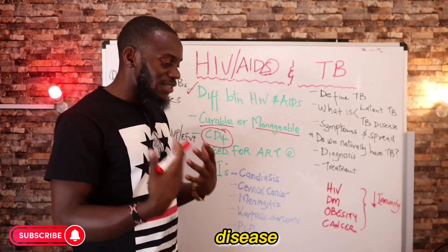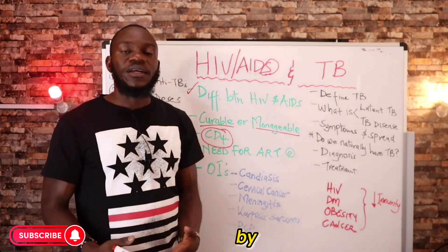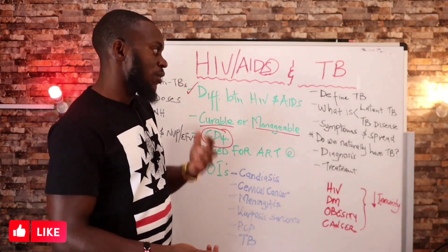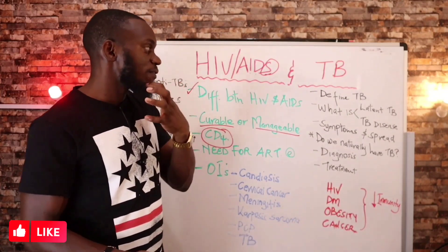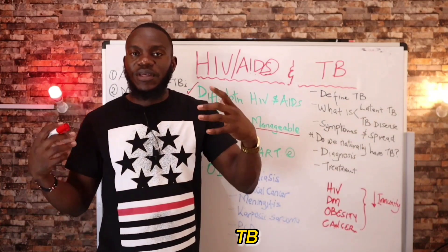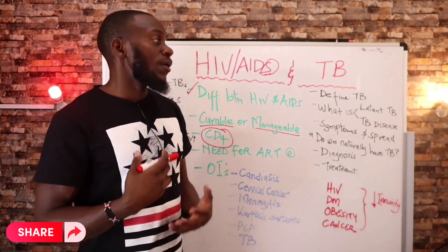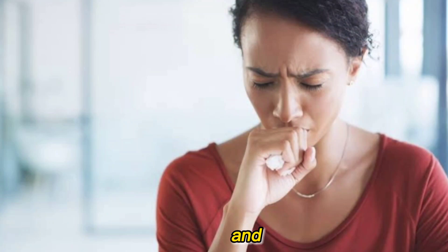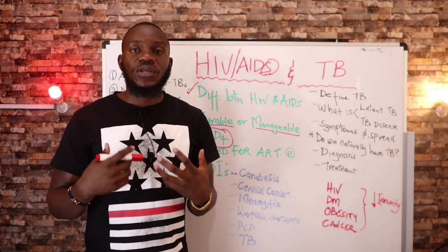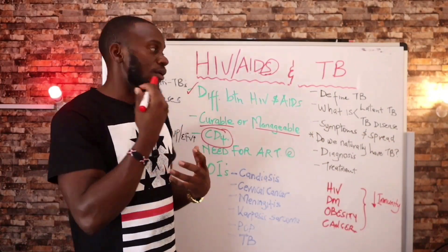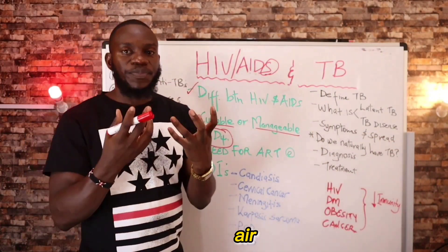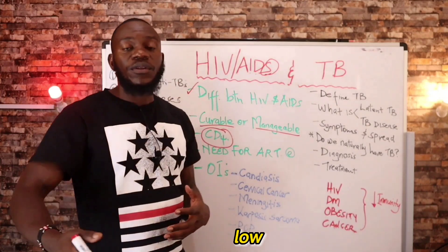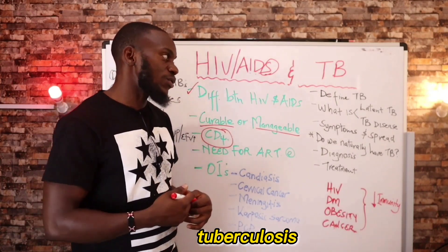TB is basically a disease caused by Mycobacterium tuberculosis — that is a bacteria. This bacteria exists in people who have active TB, and they can spread it through coughing, sneezing, laughing, and even talking. Those droplets that get into the air, once they reach you and your immunity is low, you can contract tuberculosis.